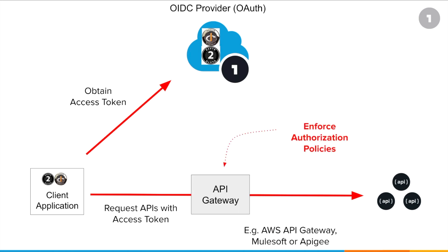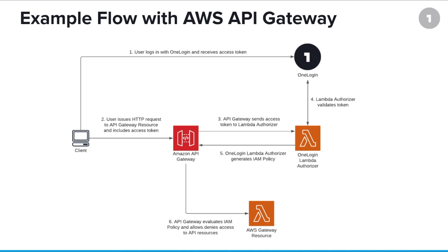In the real world, many organizations will choose to protect their APIs with an API gateway where enforcement of authorization policies will take place. Typical API gateways include the AWS API gateway, MuleSoft, or Apigee. In this video, we're focusing on the AWS API gateway.